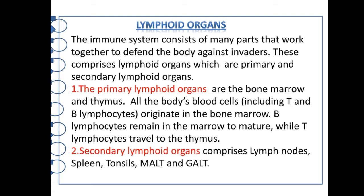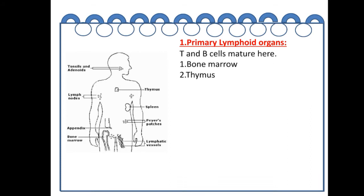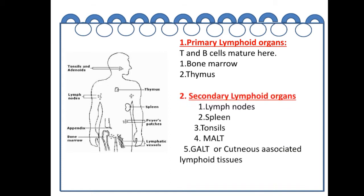Secondary lymphoid organs comprise lymph nodes, spleen, tonsils, MALT, and gut. You can see in these images the different types of lymphoid organs such as tonsils, thymus, spleen, Peyer's patches, bone marrow, and lymph nodes. In primary lymphoid organs, T cells and B cells mature. Secondary lymphoid organs include lymph nodes, spleen, tonsils, MALT, gut, and cutaneous associated lymphoid tissues.